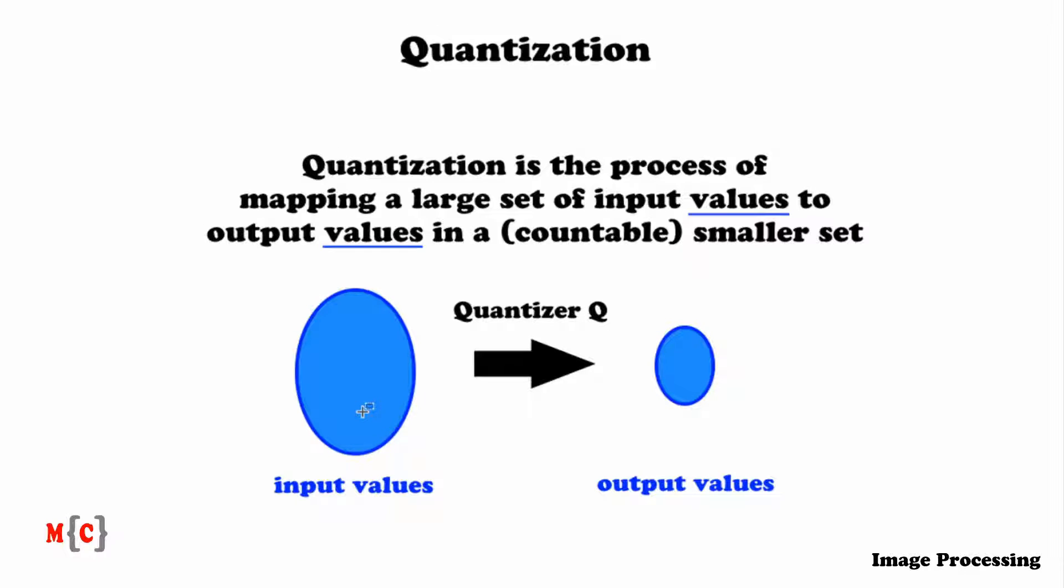And the set of input values can be anything. For example, it could be the set of real numbers. And then the only restriction that we have is that the set of output values is smaller. And this mapping is also often referred to as a many-to-few mapping, because a large set is mapped to a set with relatively only a few elements.